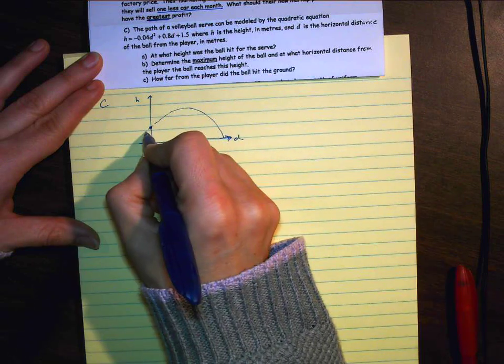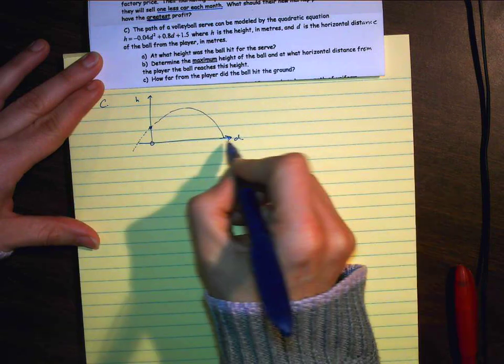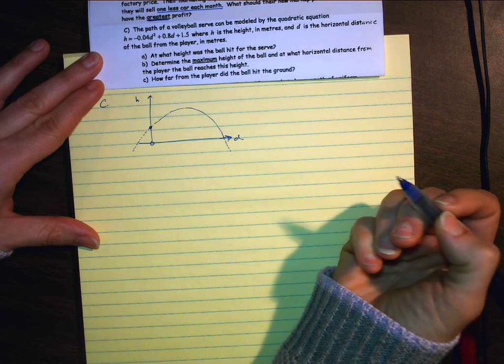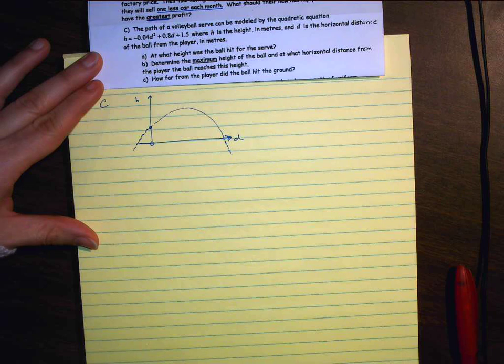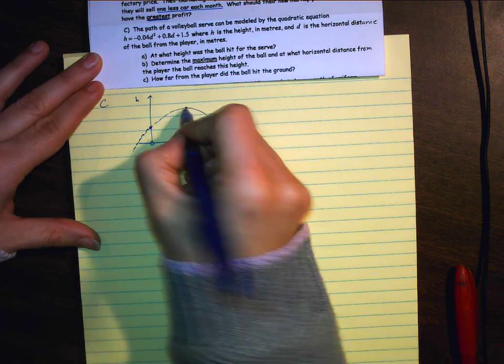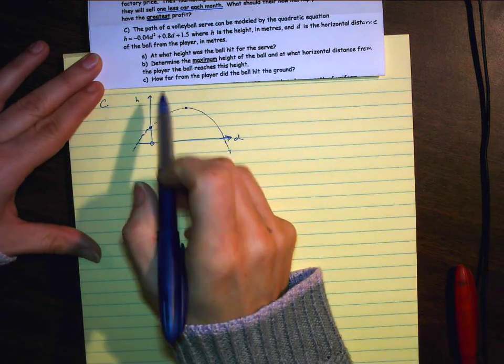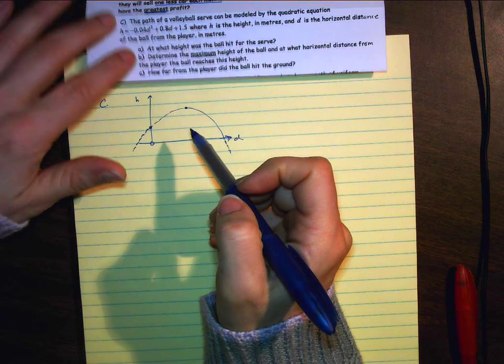So you can imagine it looking something like this. This is the part of the parabola. The dotted lines are really the parts that mathematically are correct, but in terms of the physics are not. The vertex is here. We know it's going to be opening down because of the negative.